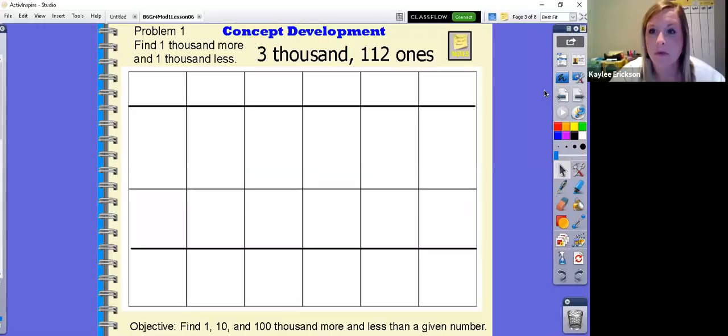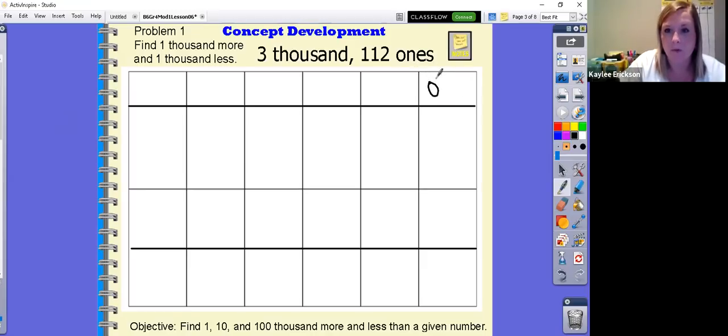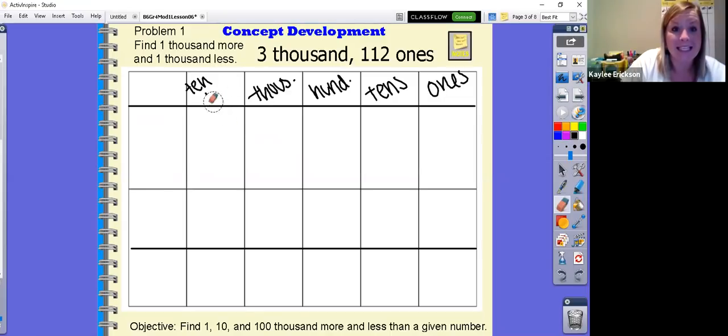So we're going to continue to take just what we've learned and put it into action. I have quite a few boxes here. As always, I am going to write in our place value placements. We have our ones, tens, hundreds, thousands, ten thousands, hundred thousands.